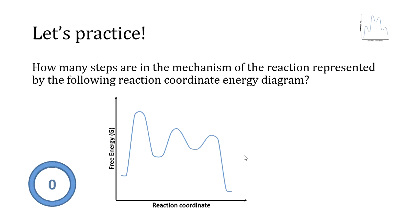When trying to determine the number of steps in the mechanism of a reaction based on its reaction coordinate energy diagram, all we have to do is count the number of peaks, or transition states, represented on the diagram. This reaction has three transition states, so there are three mechanism steps.